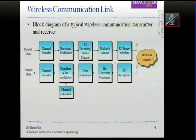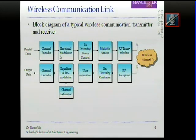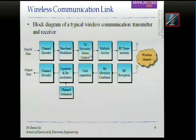This is a general block diagram of a typical wireless communications system. When the data comes in — assuming the data is digital — it will first go through the channel encoder to encode the data and provide extra protection. Then we modulate the data using a baseband modulator. For wireless communication, we also have transmit diversity and power control, which is very important.